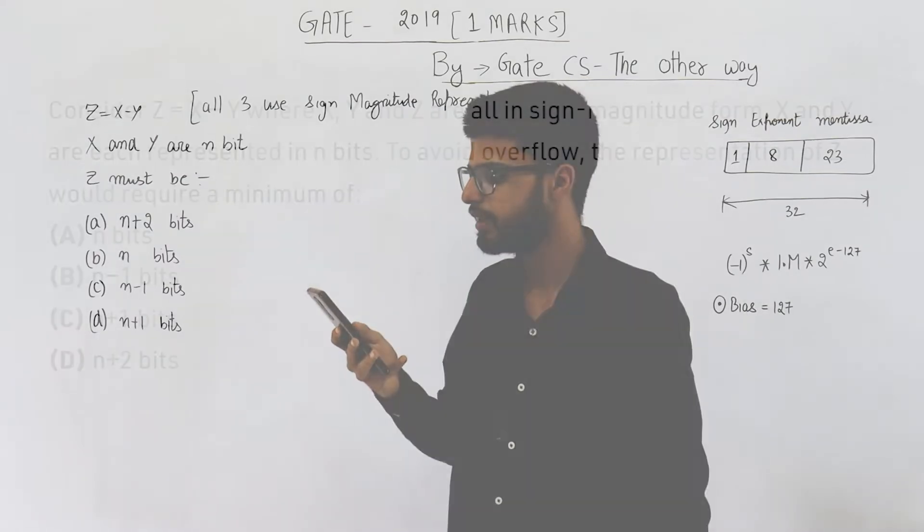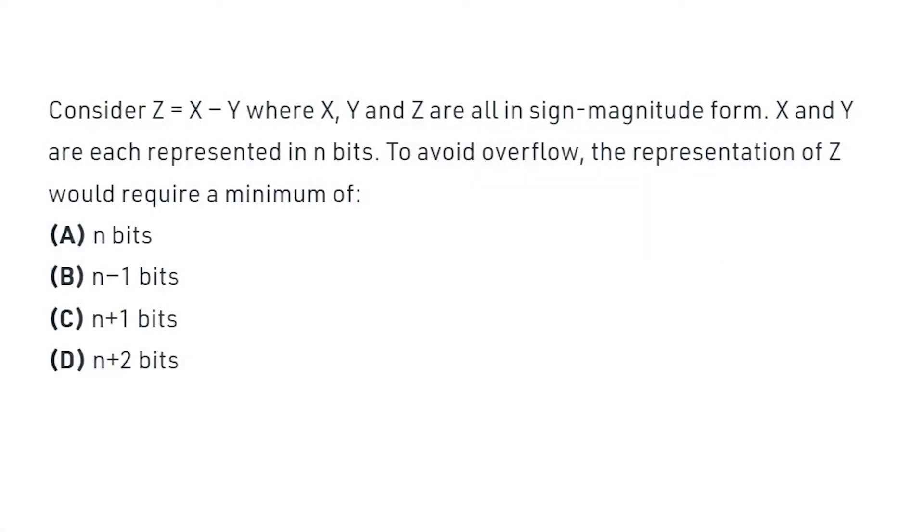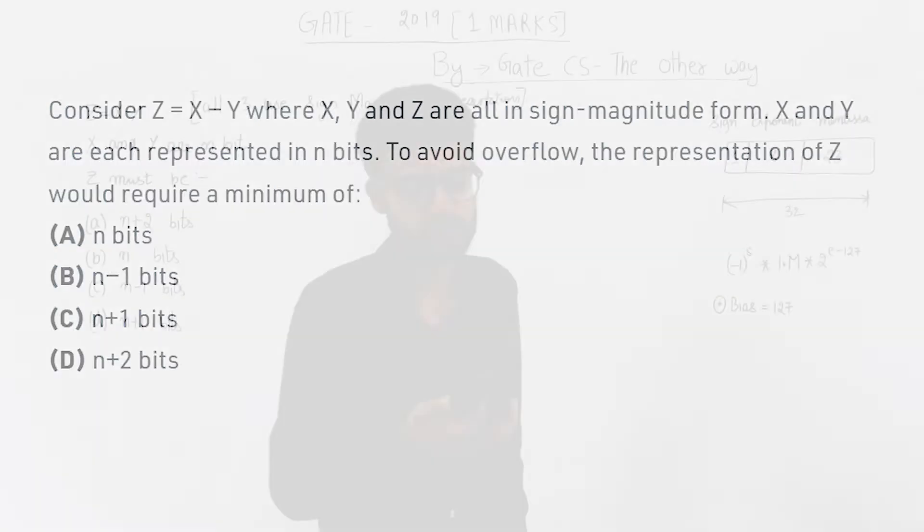It says consider z is equal to x minus y where x, y and z are all in sign magnitude form. X and y are each represented in n bits. To avoid overflow, the representation of z would require a minimum of n bits, then n minus 1, n plus 1, and n plus 2 bits.